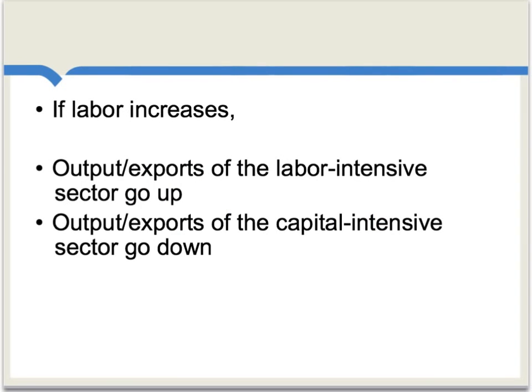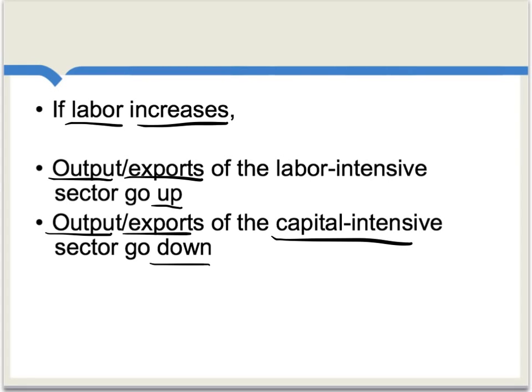The theorem says this: if the supply of labor increases in an economy, we then find that the output and exports of the labor-intensive sector go up. Perhaps a bit more counter-intuitively, we also find that the output and exports of the capital-intensive sector will go down. That's for an increase in labor.